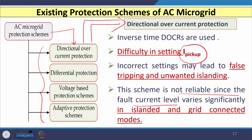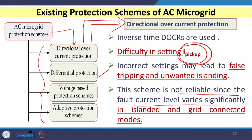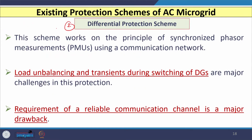The directional overcurrent scheme is not reliable since fault current levels vary significantly between islanded mode and grid-connected mode. The second scheme is differential protection, which works on the principle of synchronized phasor measurements using a communication network. Load balancing and transients during switching of distributed energy resources are major challenges, and this scheme requires a communication channel — failure of which requires a backup scheme.